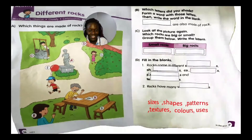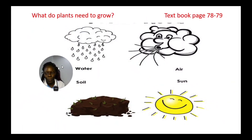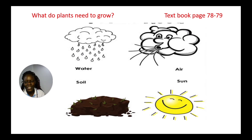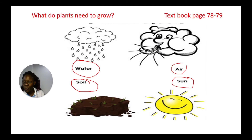What do plants need to grow? On pages 78 and 79 — remember, plants are living things and they need water, air, sunlight to make food, and soil. Plants need water, soil, air and sun.